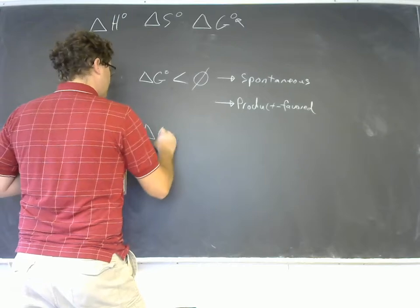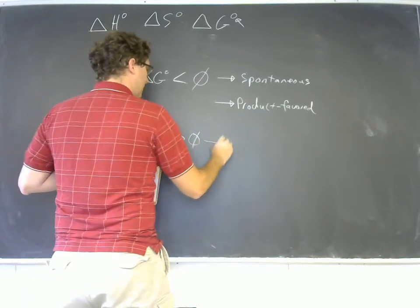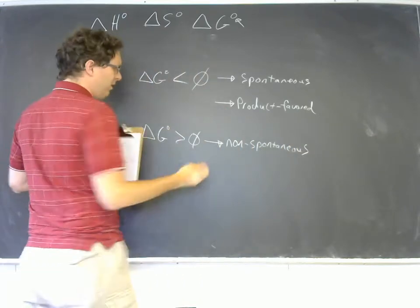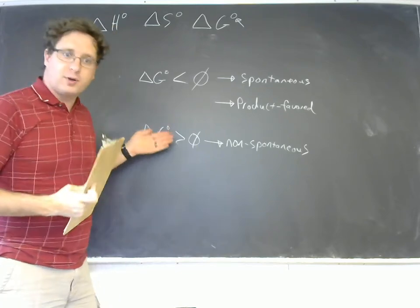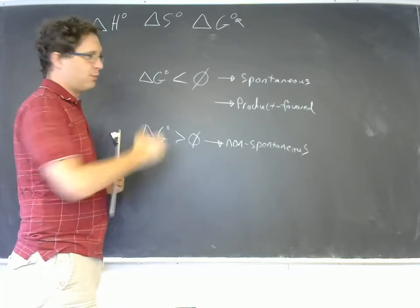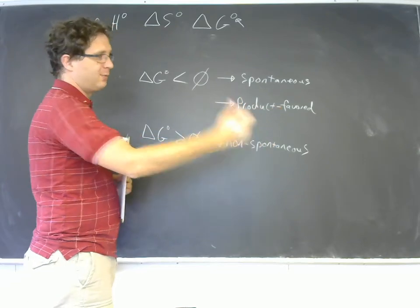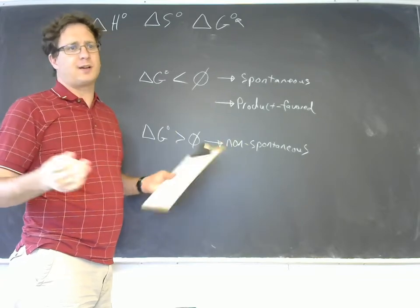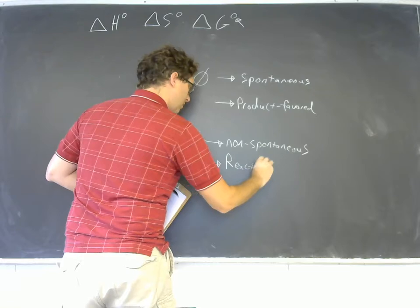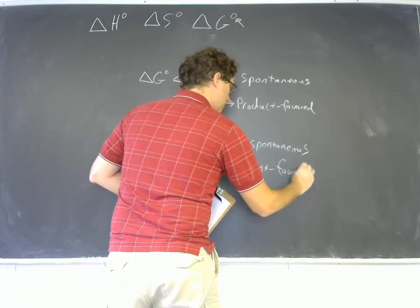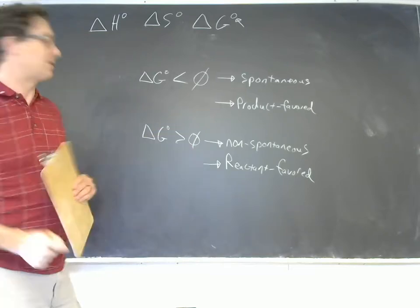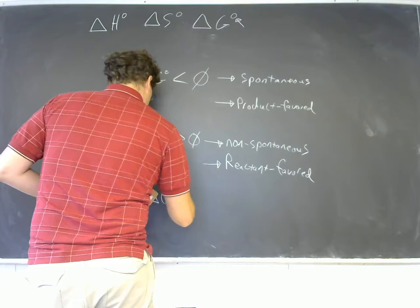If ΔG° is greater than zero, we've said that means it's non-spontaneous. What we really mean is that when you have all your products and reactants at one molar concentration and one atmosphere of pressure, it will not proceed forward to produce more products. Instead it will go in reverse, consuming some product and regenerating some reactant, producing a reactant-favored reaction mixture at equilibrium.